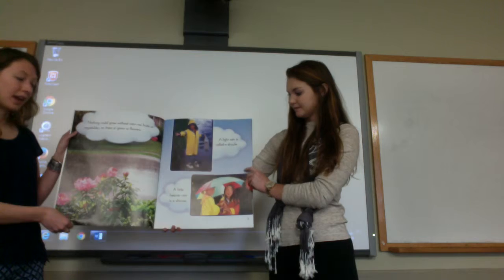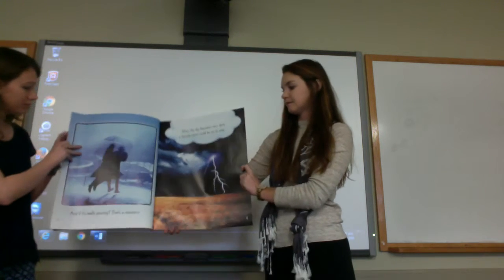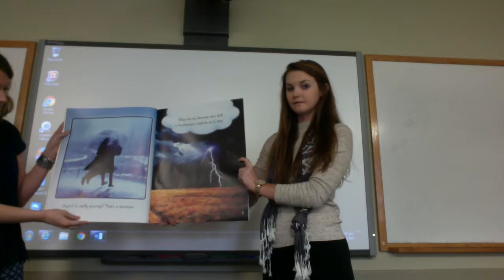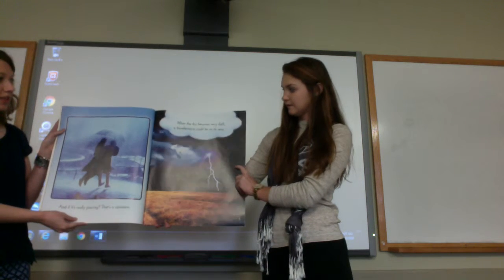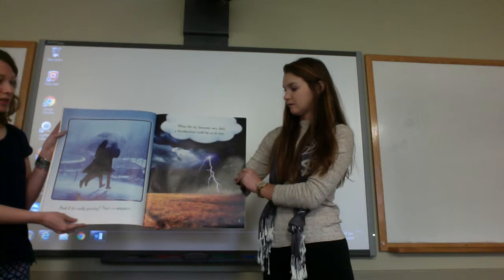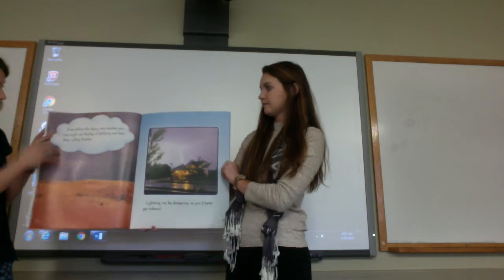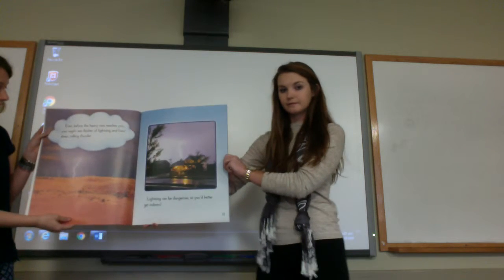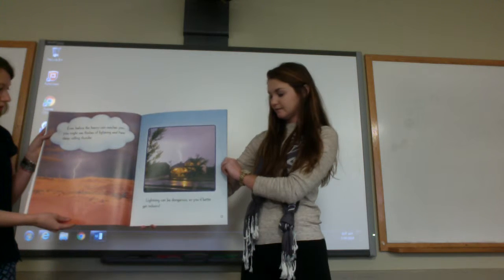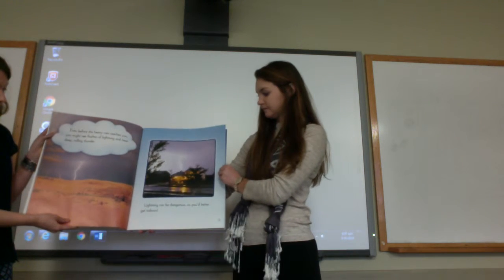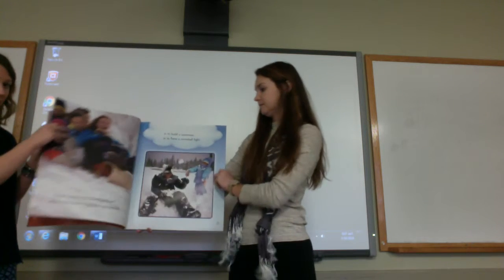A light rain is called a drizzle, a little heavier rain is a shower, and if it's really pouring that's a rainstorm. When the sky becomes very dark a thunderstorm could be on its way. Even before the heavy rain reaches you, you might see flashes of lightning and hear deep rolling thunder. Lightning can be dangerous so you'd better get indoors. We're learning about all different kinds of storms, guys.